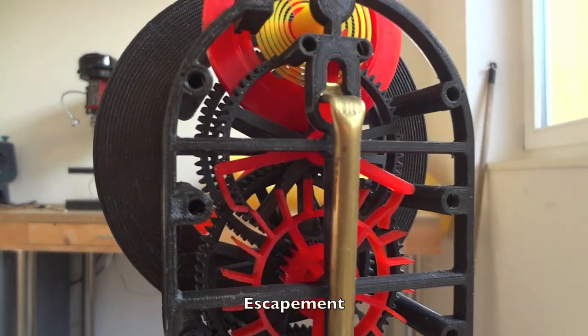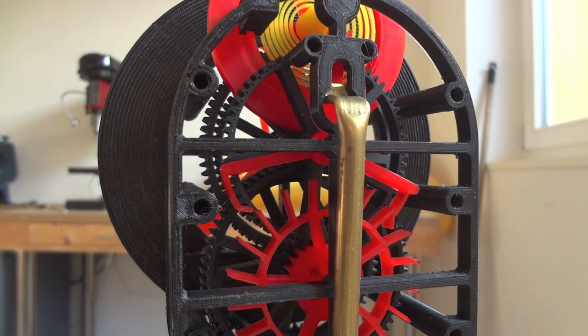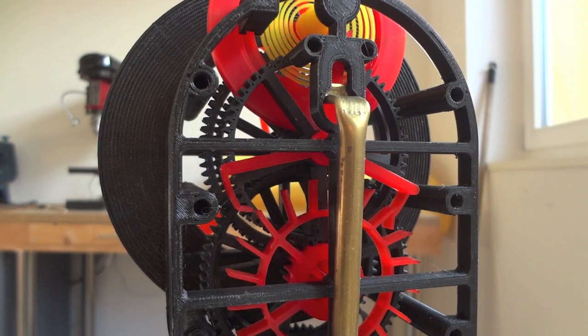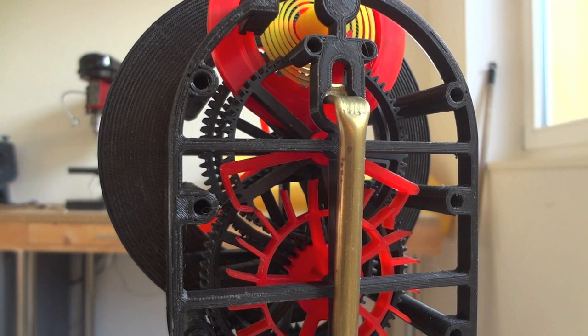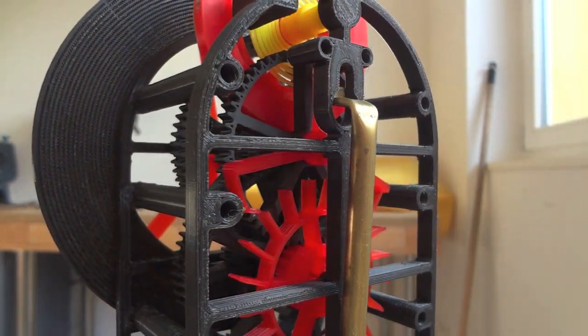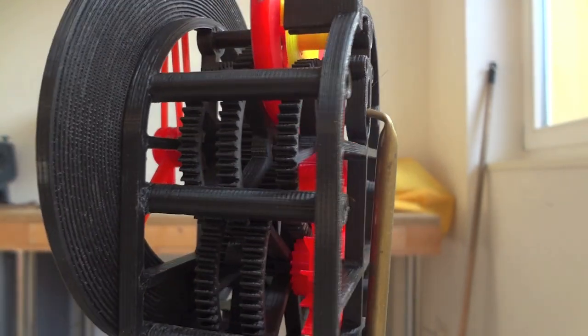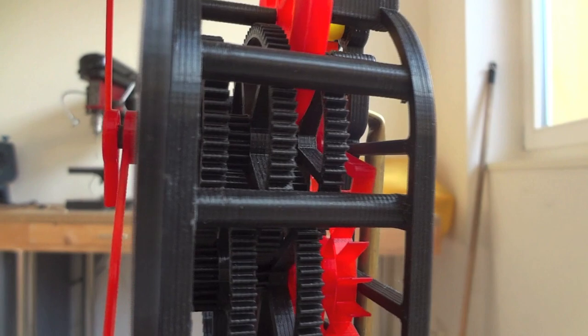Here I can see the escapement mechanism printed in red and the yellow spring. The fast-moving black gear is the gear for the seconds, and behind that gear, a little larger, is the gear for the minutes, and next to it the gear for the hours.